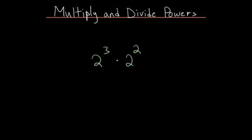For this video, I'd like to focus on different exponent properties, specifically multiplying and dividing different powers of our bases. So we have this example problem: 2 to the 3rd times 2 squared. The simple pattern is that when they have the same base, you add the exponents, so you get 2 to the 5th.